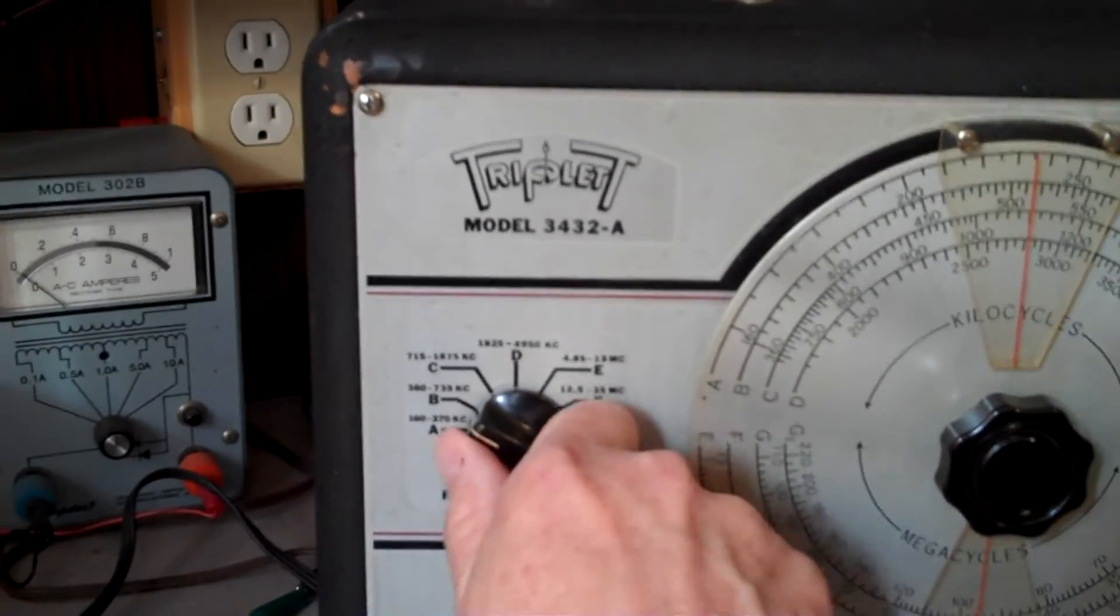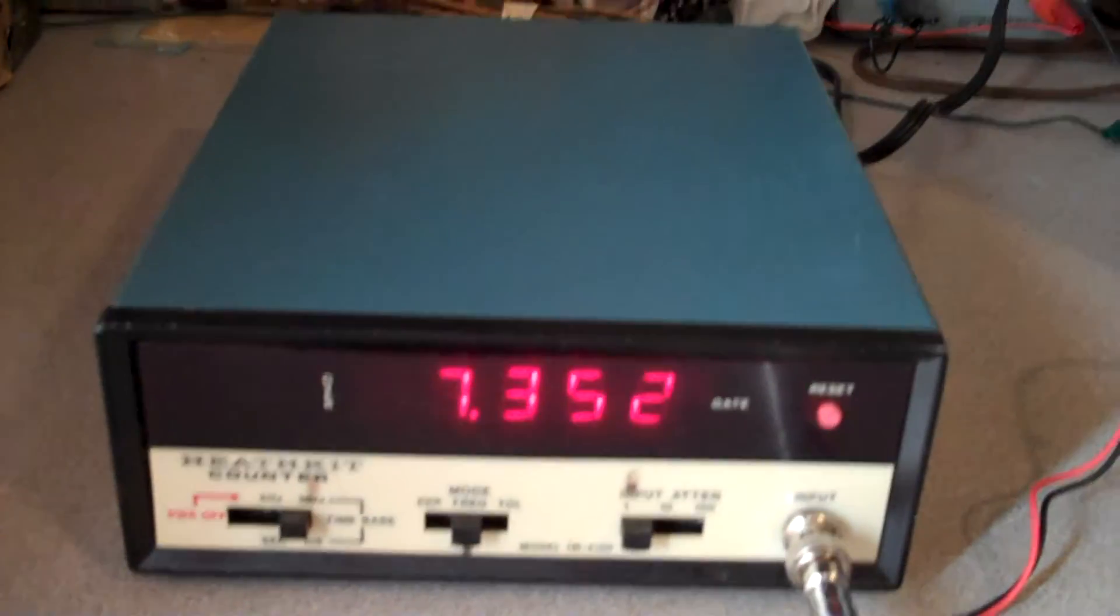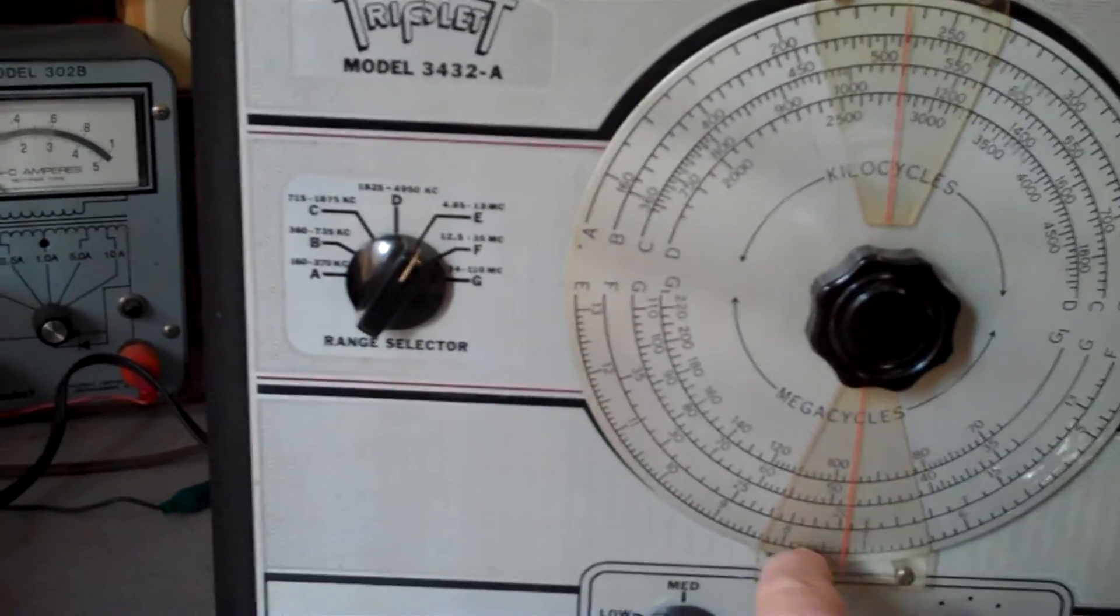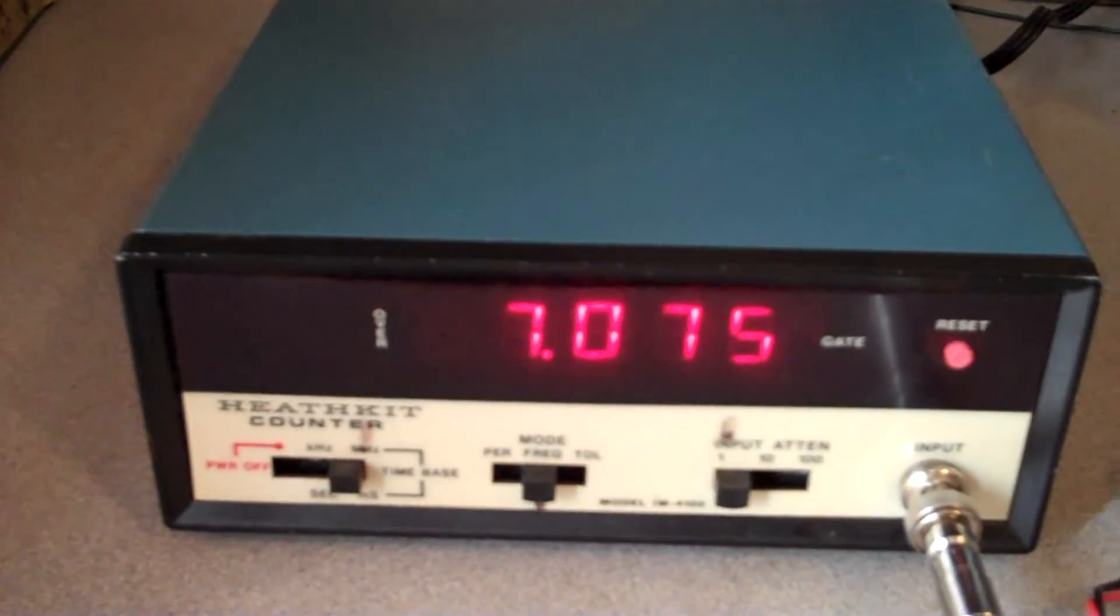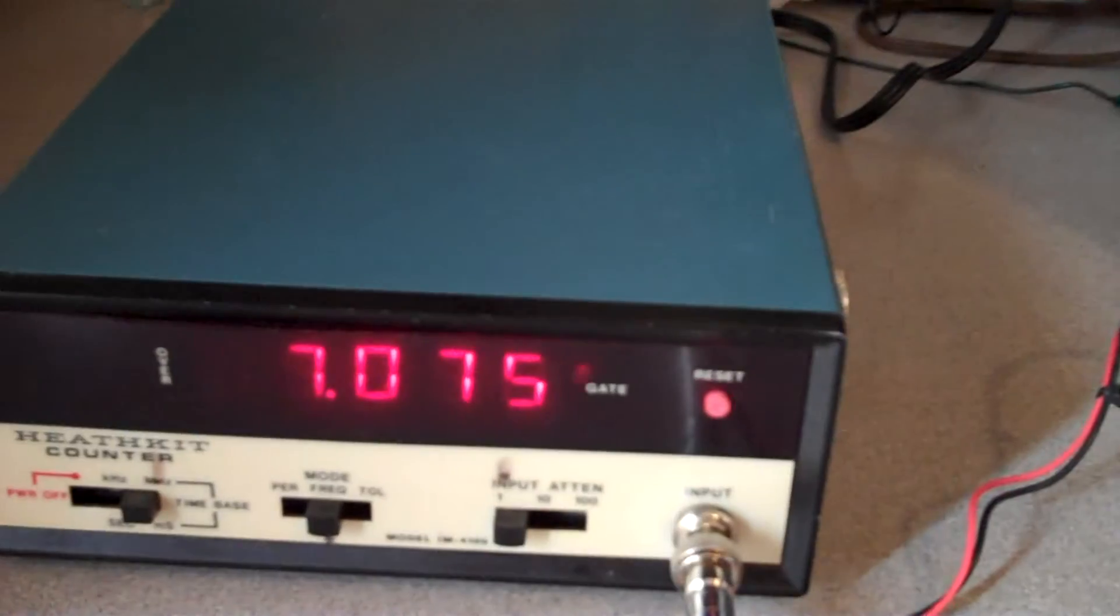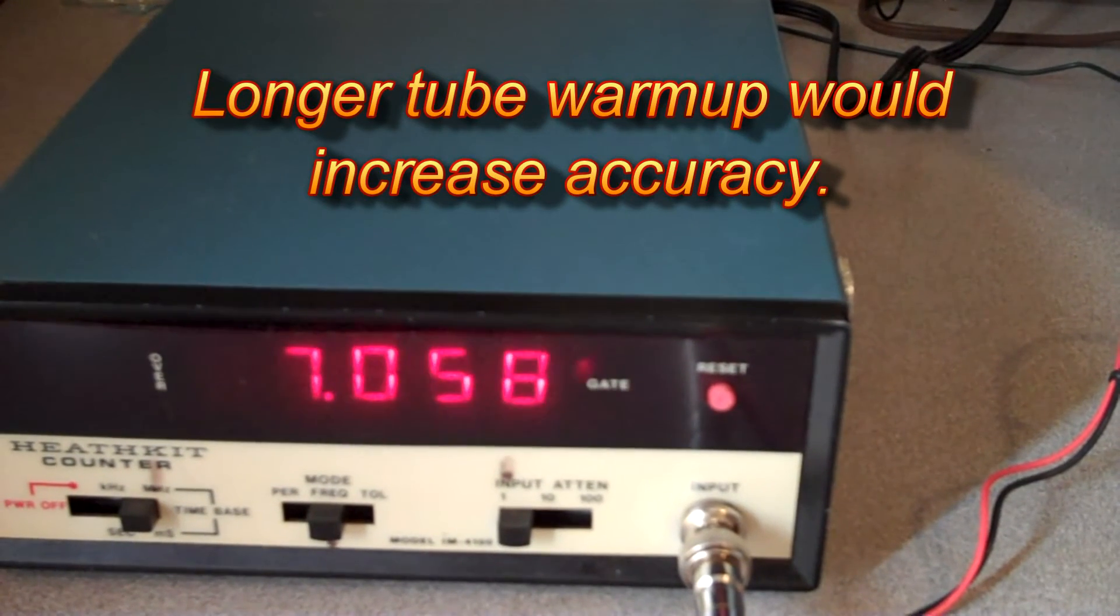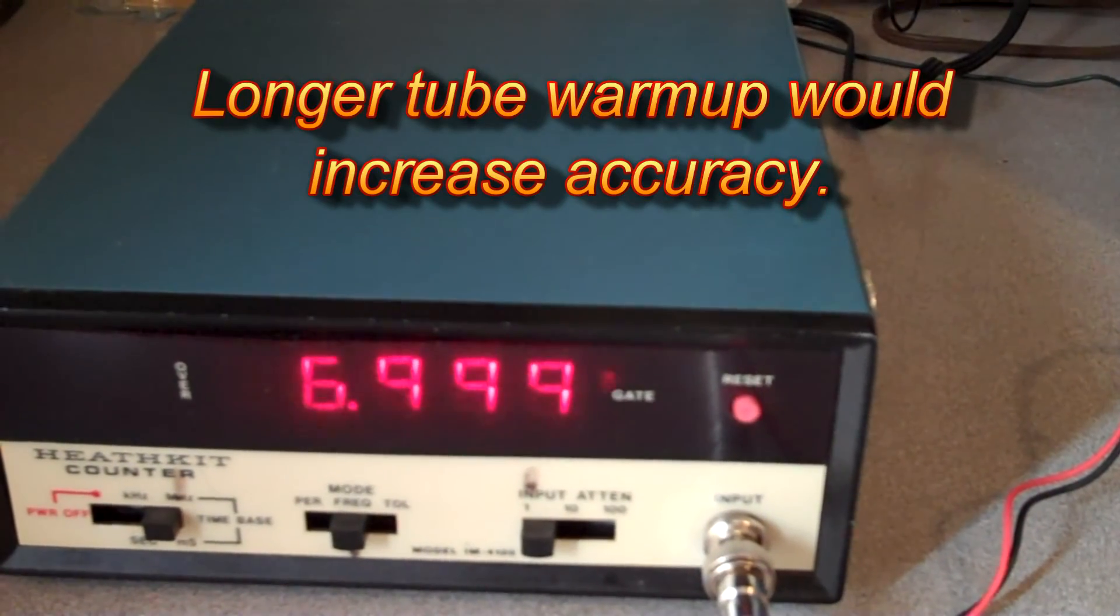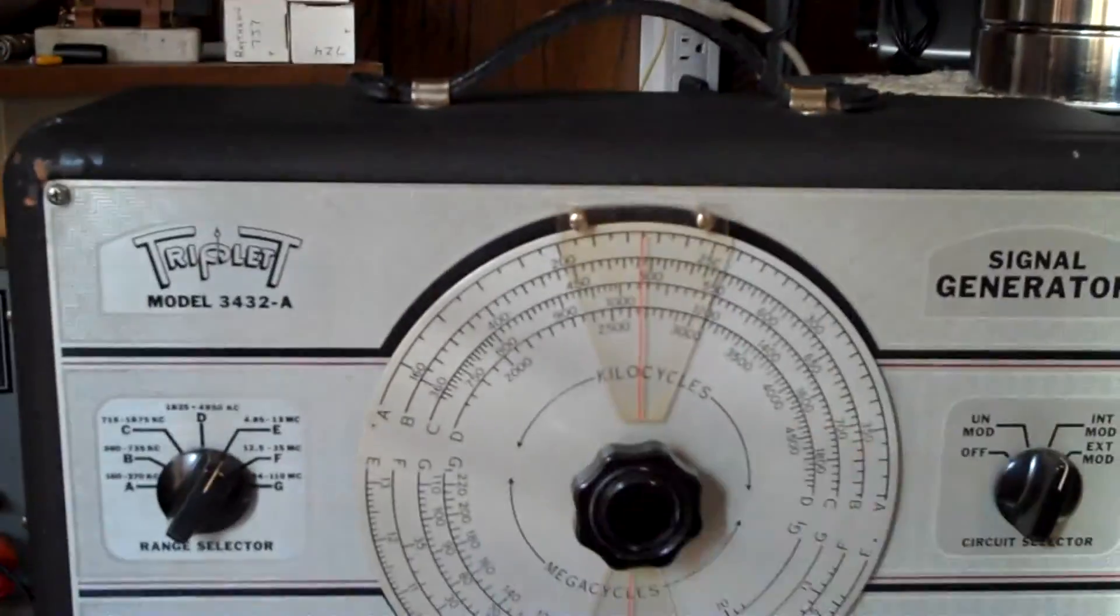All right, let's go to the 4.85 up to 13 megacycles. Let's see what that does. Right now we would be on scale E, which would be this bottom one down here. So let's crank it up to about 7 and see what we get. 7.075. Not bad at all. Let's see. We'll take it on down to exactly 7 on there. All right, it's a little bit off down here at the bottom. That's why you need a frequency counter whenever you set your RF generator.